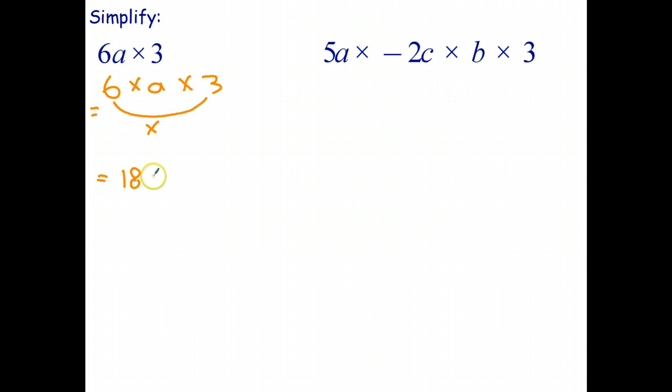And 18 times a, I'll write it without the multiply sign, which we can do in algebra. And 6a times 3 simplifies to 18a. So notice these are not like terms. The letter parts, the variable parts are not the same. But we can multiply any two terms together, any two factors.